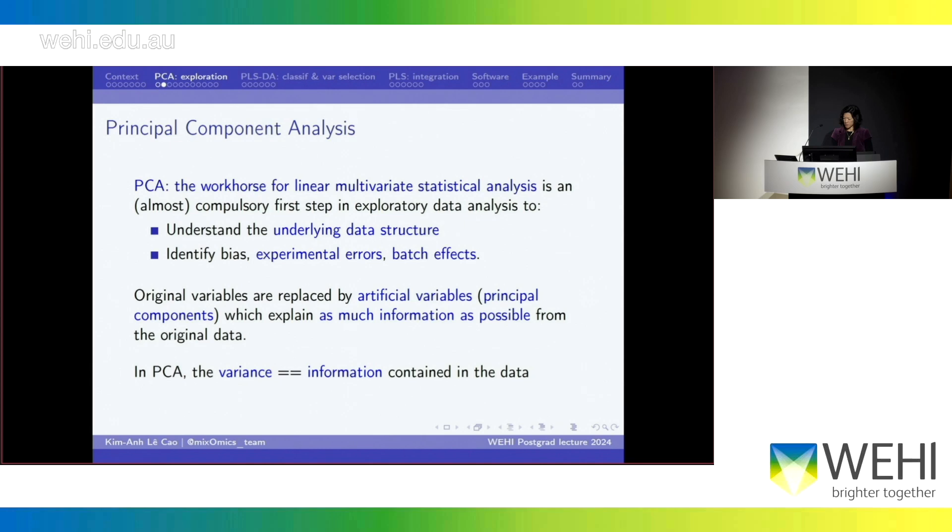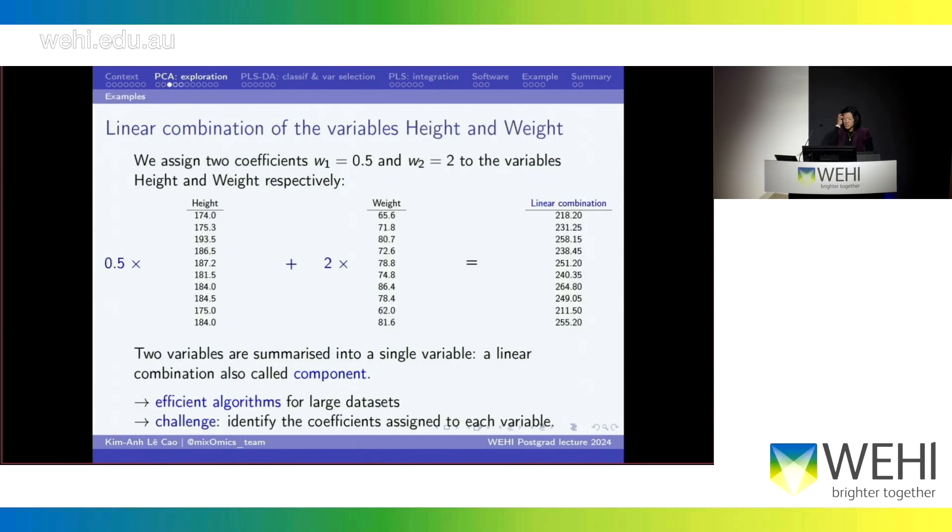So I'll give you some example here about what a linear combination of variables is. So assume we've measured two variables, height and weight in 10 individuals. But instead of looking at the height and the weight, I'm going to combine them. So you can take the average if you want. And then in that case, you would assign a coefficient that is 0.5 to each of them.